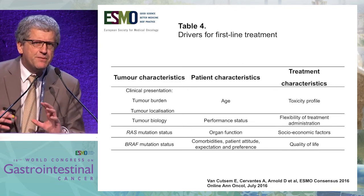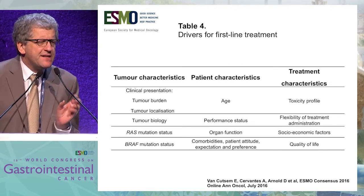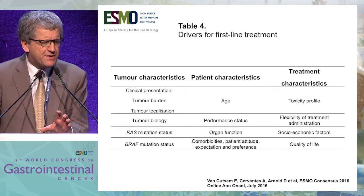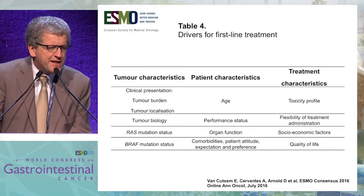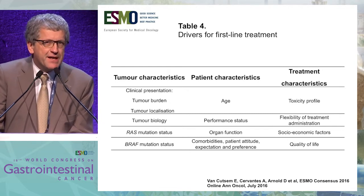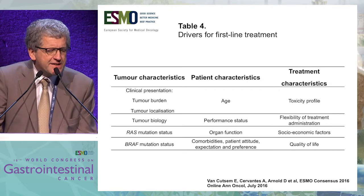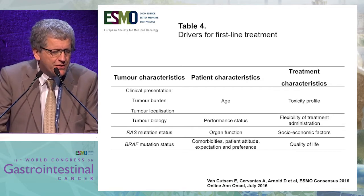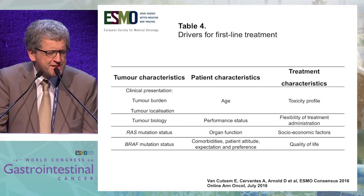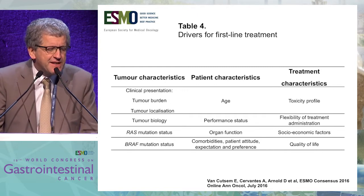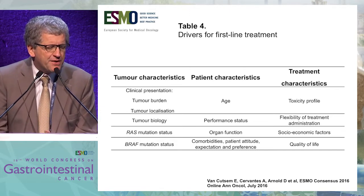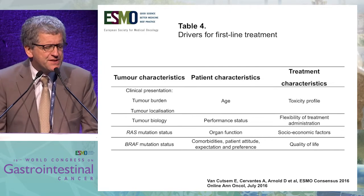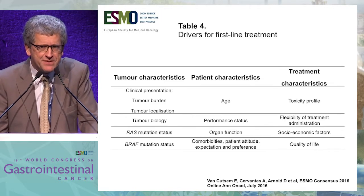For first-line treatment decisions in more extensive disease, we defined drivers grouped into three categories: tumor characteristics including clinical presentation, tumor biology, and RAS and BRAF mutation status; patient characteristics including age, performance status, organ function, and comorbidities; and treatment characteristics including toxicity, flexibility of administration, socio-economic factors, and quality of life. Patient attitude, expectations, and preferences should also be taken into account.